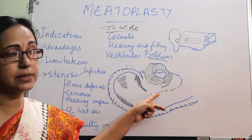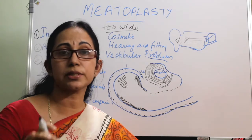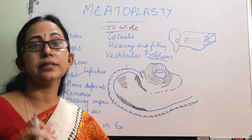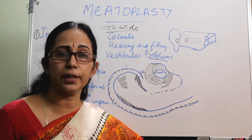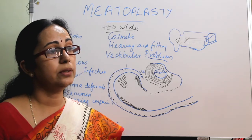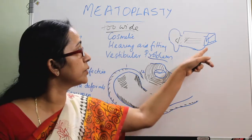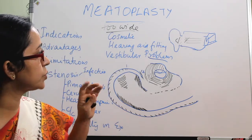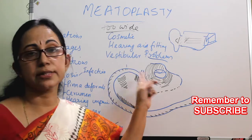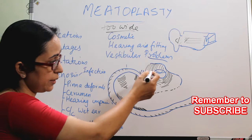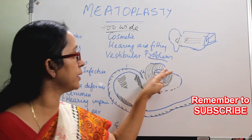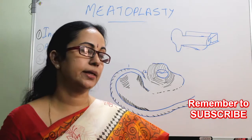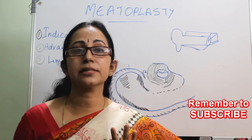Three problems to address during meatoplasty: first, adequate excision of the cartilage — the cartilage should not project into the posterior canal wall and should not be exposed. Second, the bone should be adequately drilled — the ridge should be lowered to the floor of the external auditory canal. Third, there should be adequate meatal skin circumference — the circumference of the anterior and posterior meatal skin should be adequate.